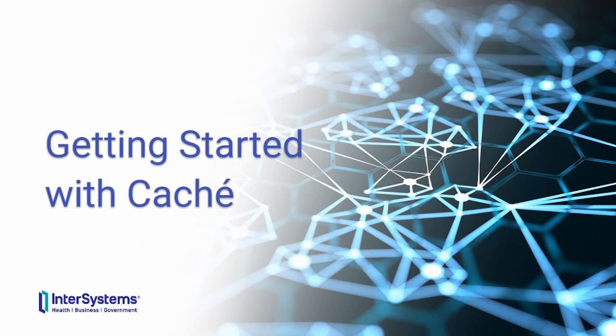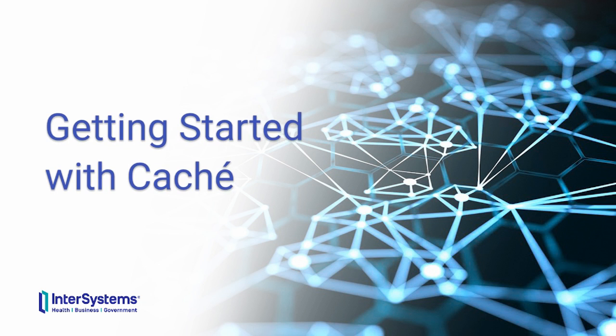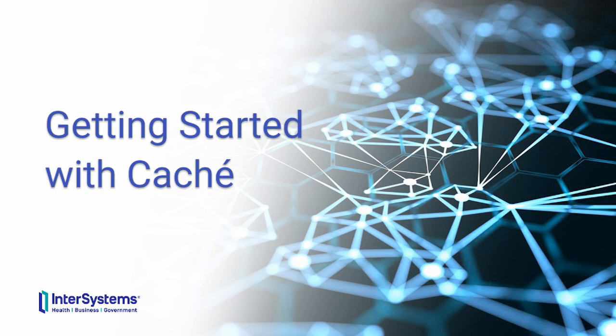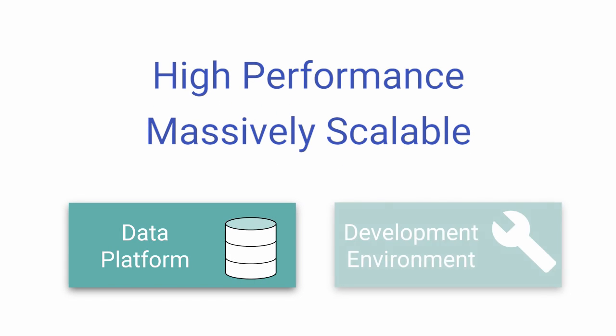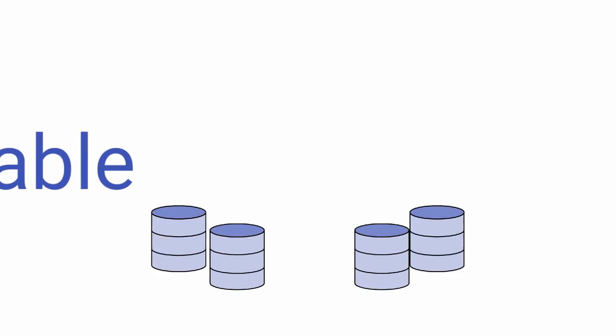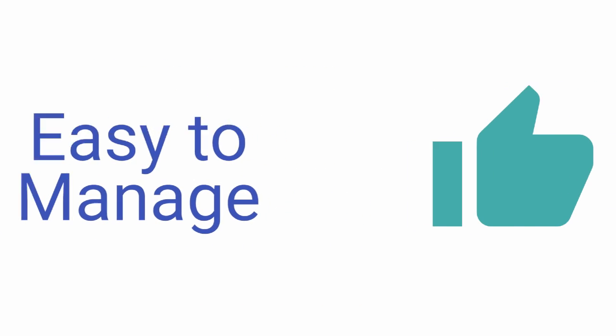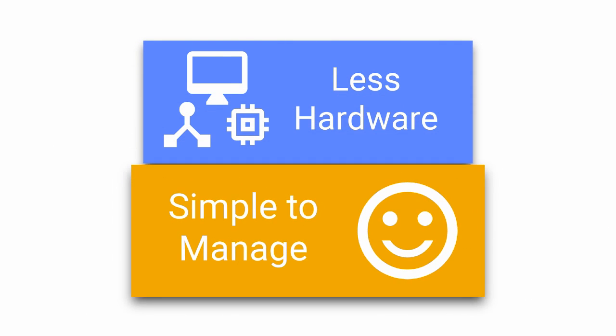Welcome to Getting Started with Cache. This video introduces you to Cache and many of its characteristics. Cache is a high performance and massively scalable data platform and development environment for creating applications. It is fast, scalable, and easy to manage. It performs and scales better with lower hardware requirements and is simpler to configure and manage.